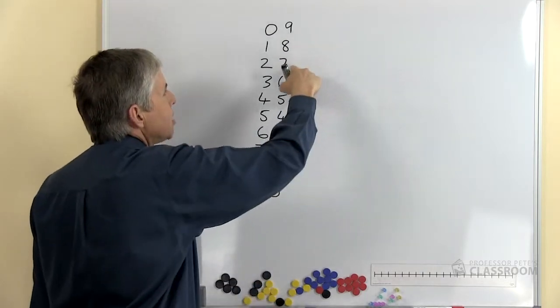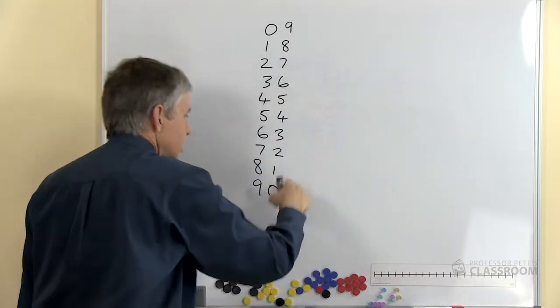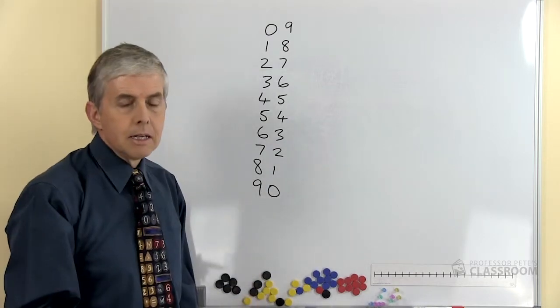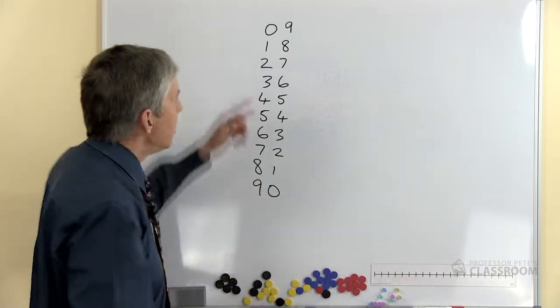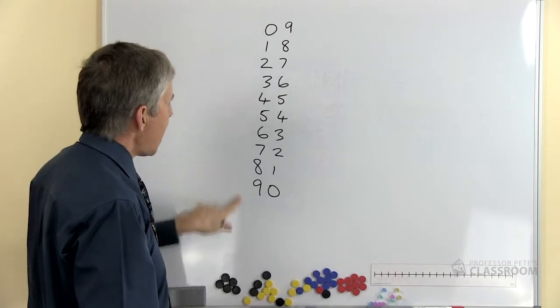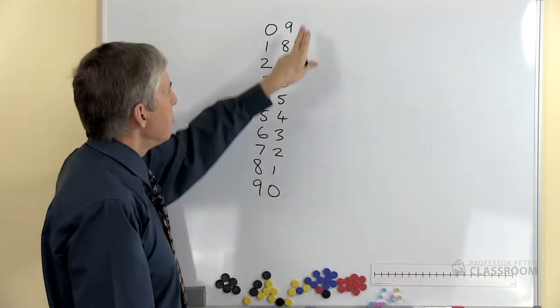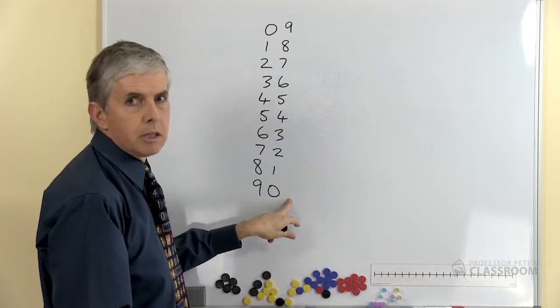So we have nine, eighteen, twenty-seven, thirty-six, forty-five, and so on all the way to ninety. So there's a really neat pattern there. The number of tens goes up by one each time. The number of ones goes down by one each time.